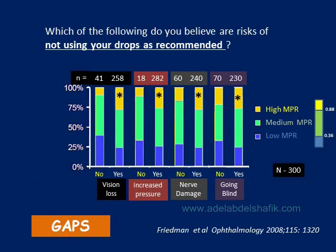In one study, patients were asked which risks they believed were associated with not using the medication as recommended. Those who believed there would be vision loss had higher medication possession ratios than those who did not believe that. Similarly, those who believed not using the drug would increase eye pressure, cause nerve damage, or lead to blindness were more adherent. So patients need to be aware of these risks.